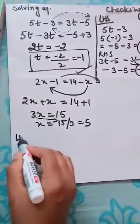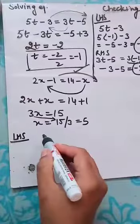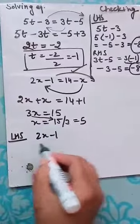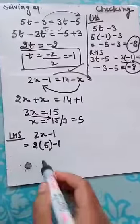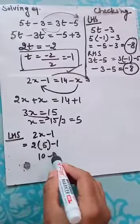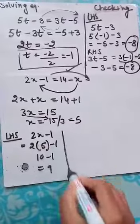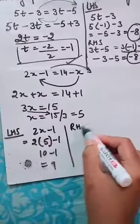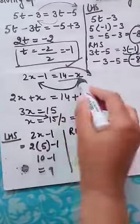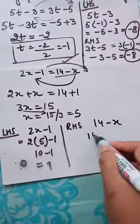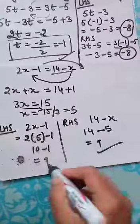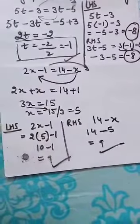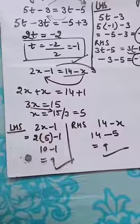So LHS is 2x minus 1. So 2 into x will be 5, minus 1. So 2 fives are 10 minus 1. The answer is 9. Similarly, you solve the RHS. RHS is 14 minus x. So 14 minus x, x is 5. So the answer is 9. Again, both the things are correct. That means whatever I have found is correct.